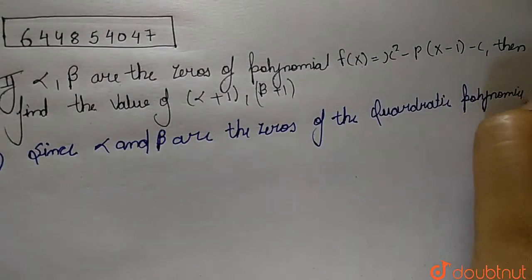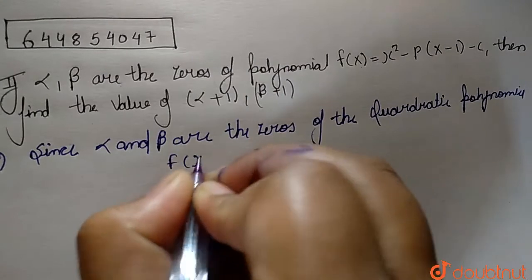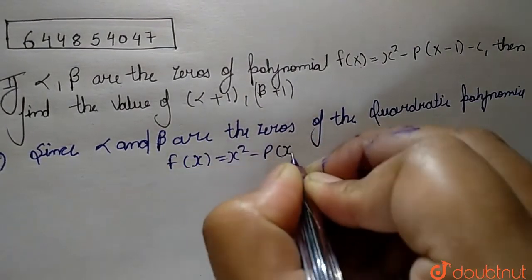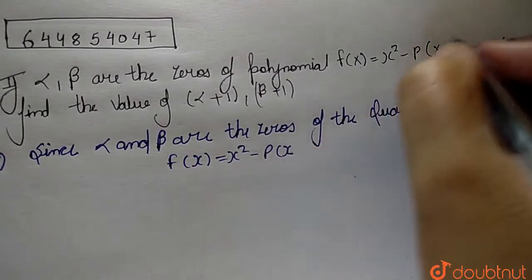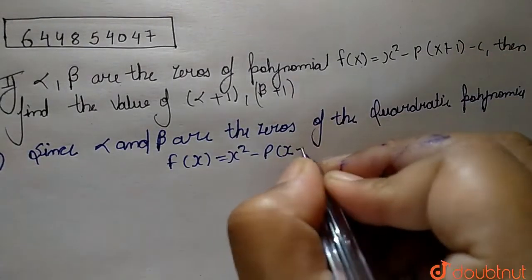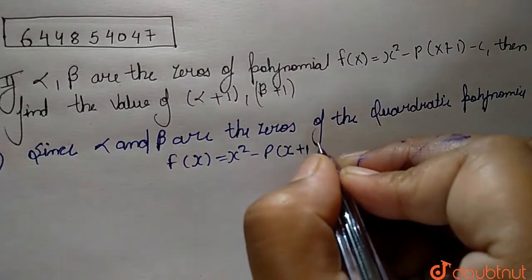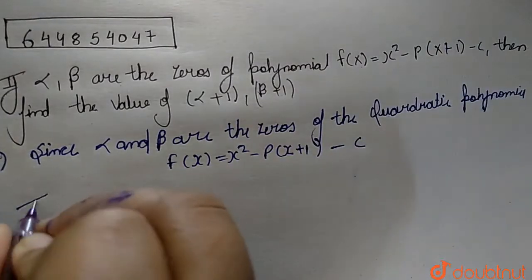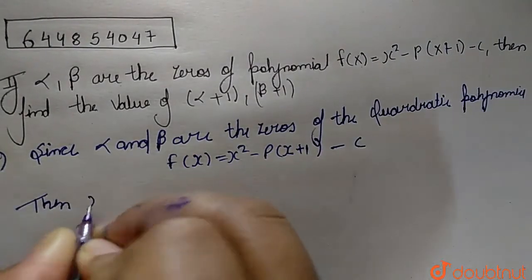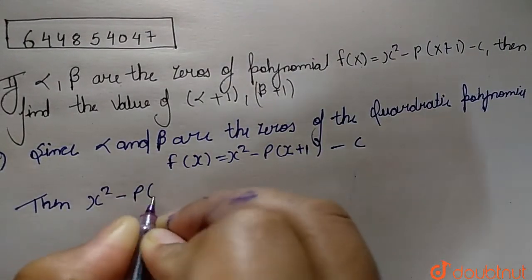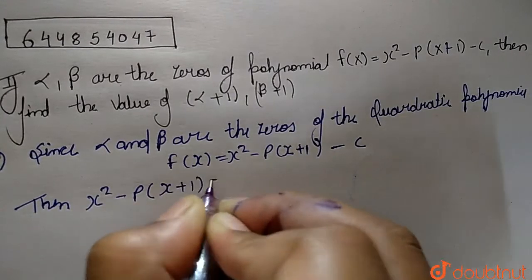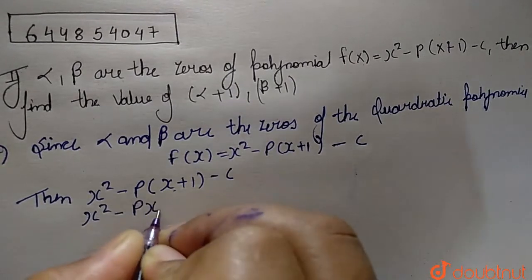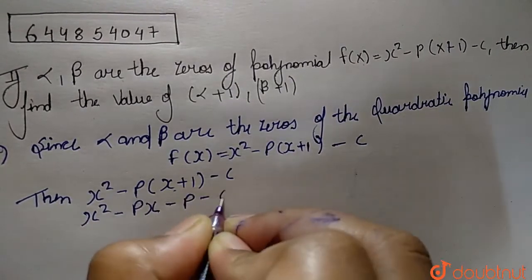So the function f(x) that we have is x² minus p times of (x + 1) minus c. When we multiply p through, we will have x² minus px minus p minus c.